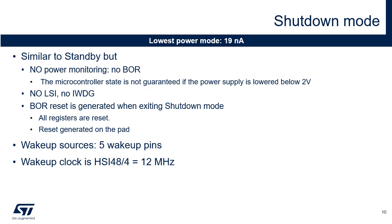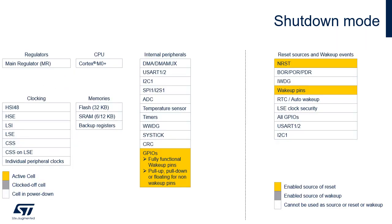The wake-up sources in shutdown mode are the five wake-up pins. When exiting shutdown mode, the wake-up clock is HSI48 divided by 4, so 12 MHz. The voltage regulator is powered down. The brown-out reset is deactivated. The wake-up events are the reset input and the five wake-up pins.